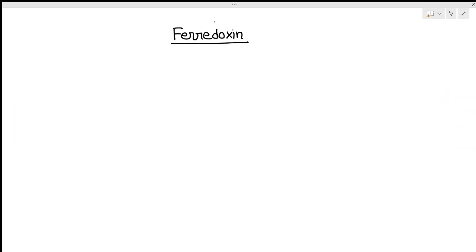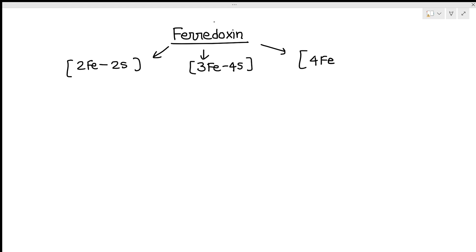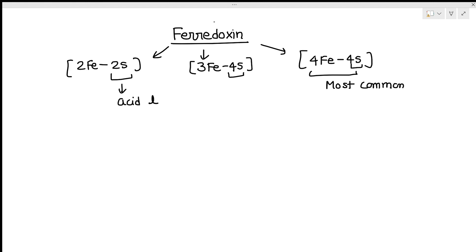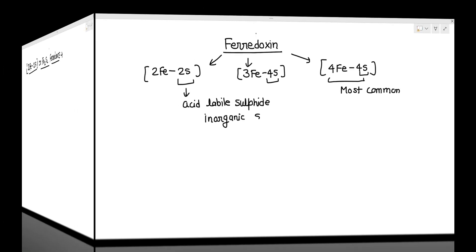The second type of iron-sulfur protein is ferredoxin. Ferredoxin may be of three types: one is called 2Fe2S protein, the second is 3Fe4S protein, and the third is 4Fe4S protein — this last one is the most common. We can recognize ferredoxin from rubredoxin by the presence of acid-labile sulfur. In rubredoxin there was no acid-labile sulfide, but in ferredoxin, inorganic sulfide is present.